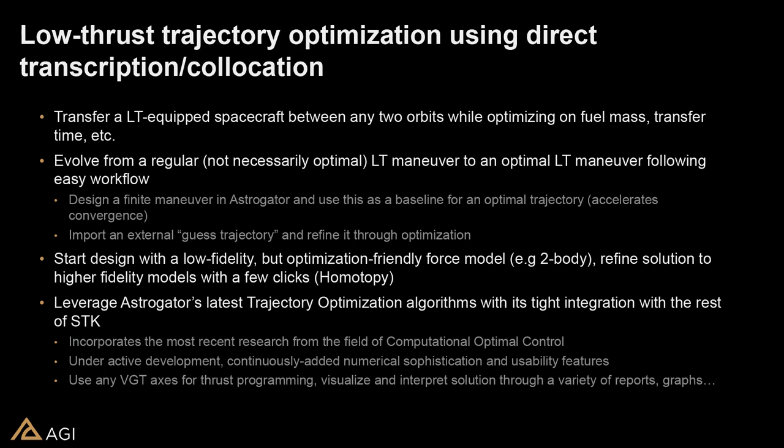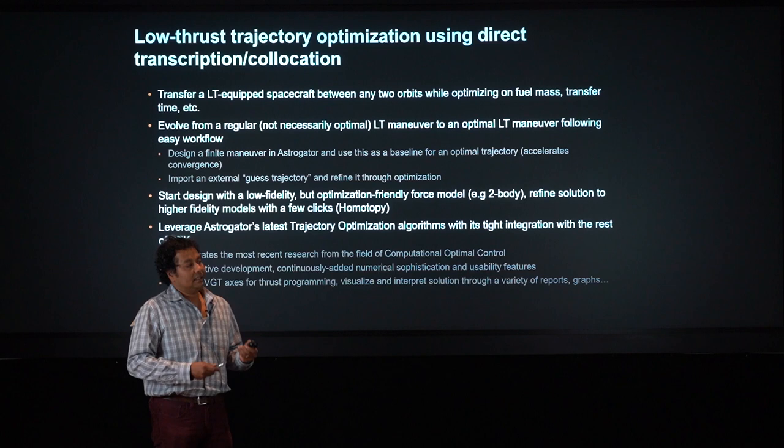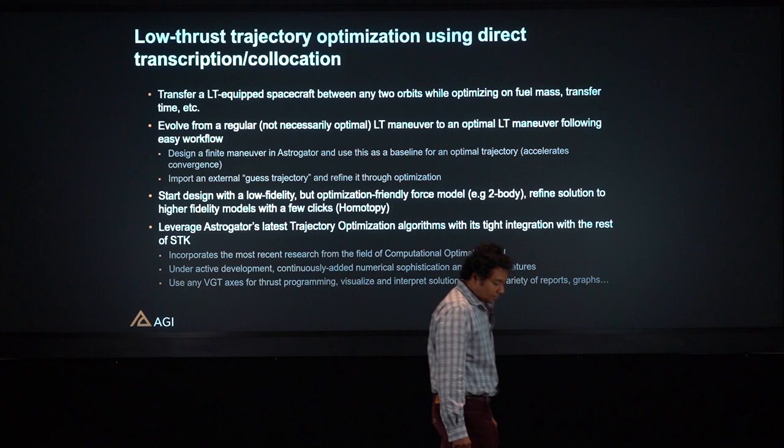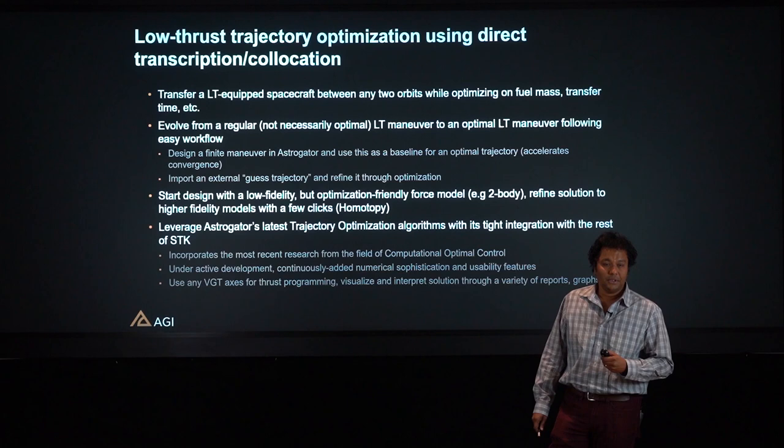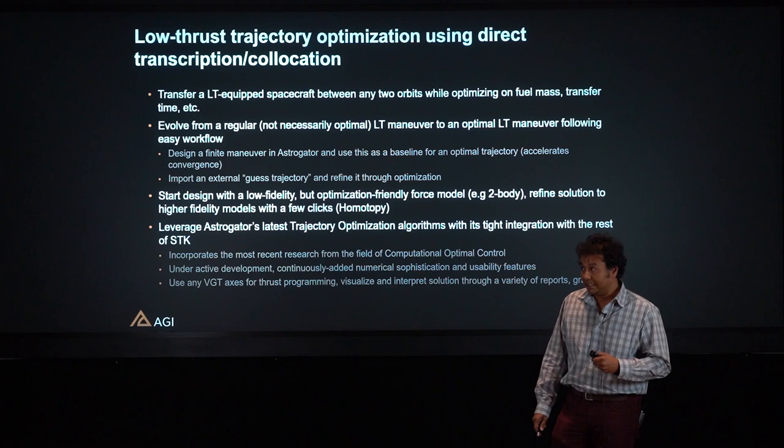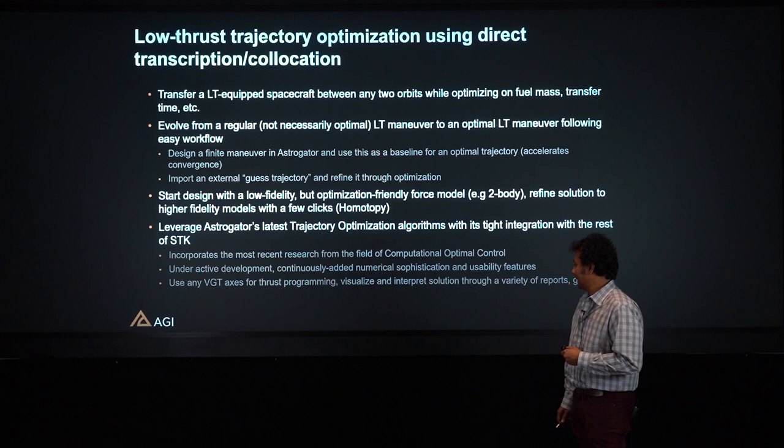AstroGator offers a variety of force models, so we can start with a lower fidelity force model — for example, a two-body model — solve the problem, and then using homotopy transition to progressively more complex models. This is a very advantageous workflow that AstroGator provides. There are also other methods for ingesting initial guesses that are all well documented — one can upload an external file to provide an initial guess to AstroGator.